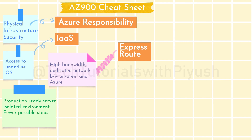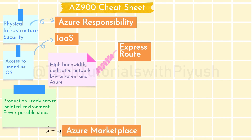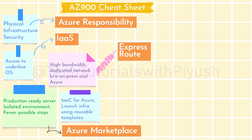If there is a keyword in the question saying you need a production-ready server with an isolated environment that can be provisioned with fewer possible steps, the answer is Azure Marketplace. Azure Marketplace is a service where third-party vendors provide a custom image with pre-built infrastructure already installed. You just subscribe to it and pay for those services to Azure, and a portion also goes to the vendor. There is a dedicated video for this in the AZ-900 playlist.